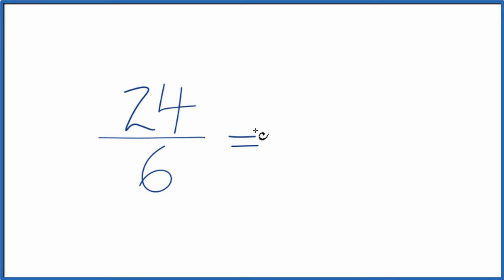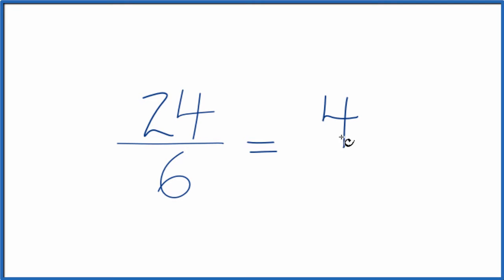So 24 divided by 6, that's 4, because 4 times 6 is 24. 6 divided by 6 is 1.